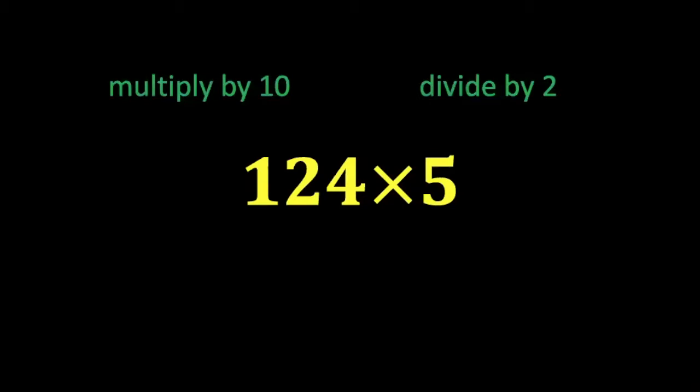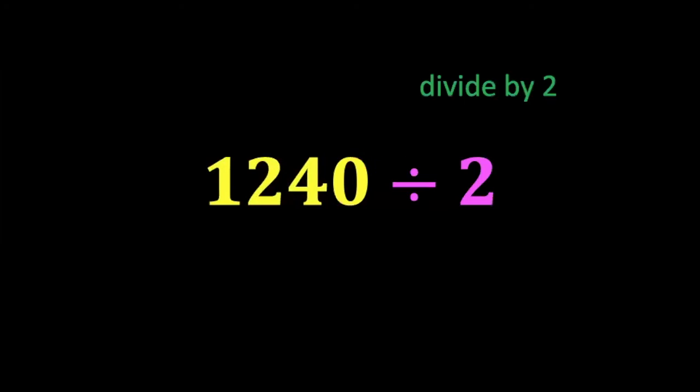Let's multiply by 10 first. So 124 times 10 you get 1240 and then you can divide that by 2. This is a very easy one to divide, but 1240 divided by 2 is 620. That is the answer.